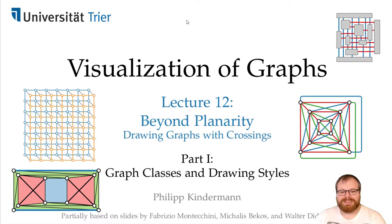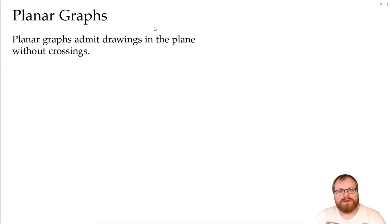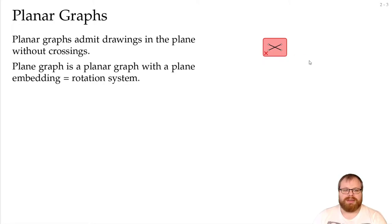In the first part we want to define some graph classes and drawing styles for those classes. We have looked a lot at planar graphs. In planar graphs we have a drawing in the plane without crossings, so we have one forbidden configuration that looks like this. We cannot have a crossing between two edges. We say that a graph is plain if we are also given an embedding, and for planar graphs that's equal to defining the rotation system, the order of the edges around every vertex.